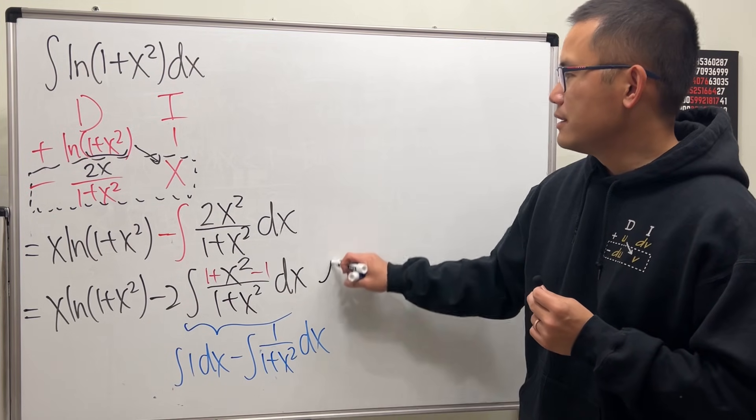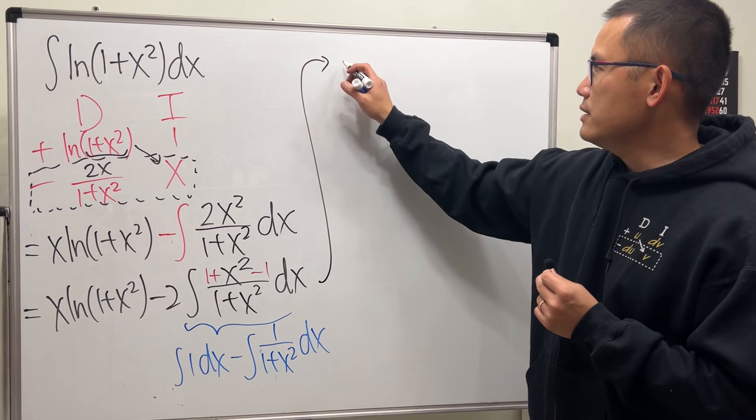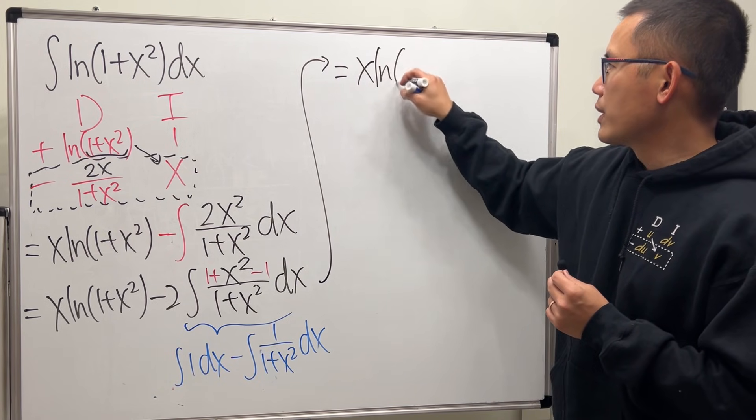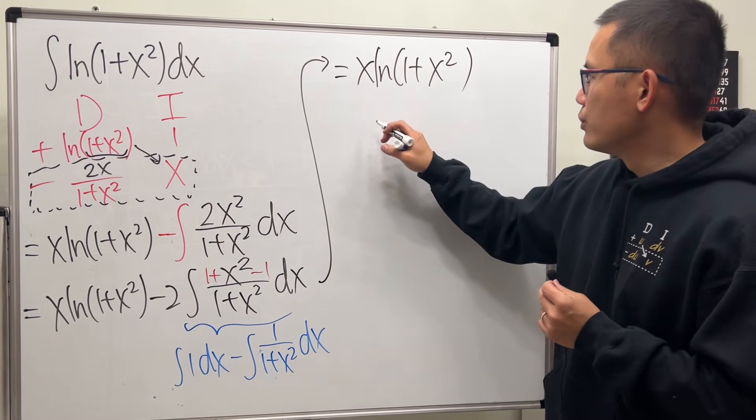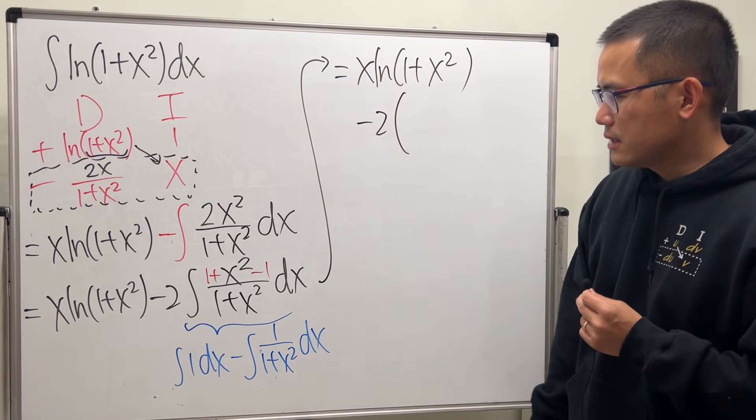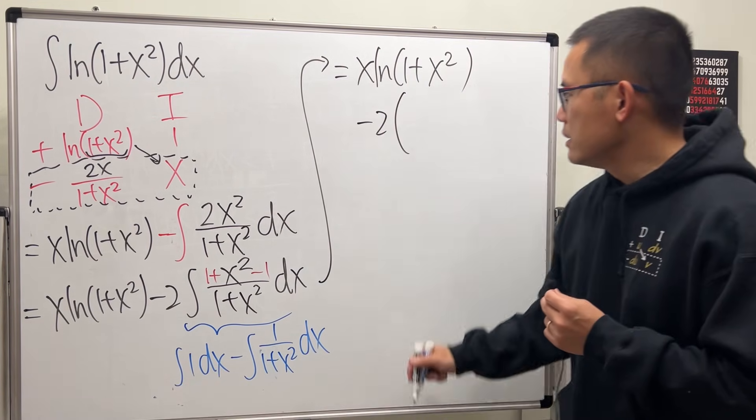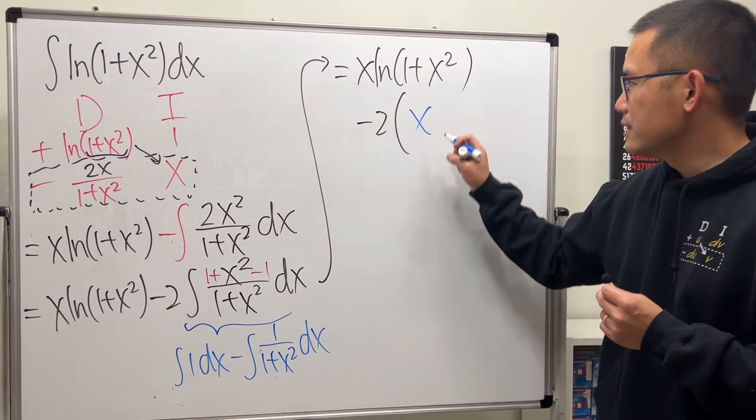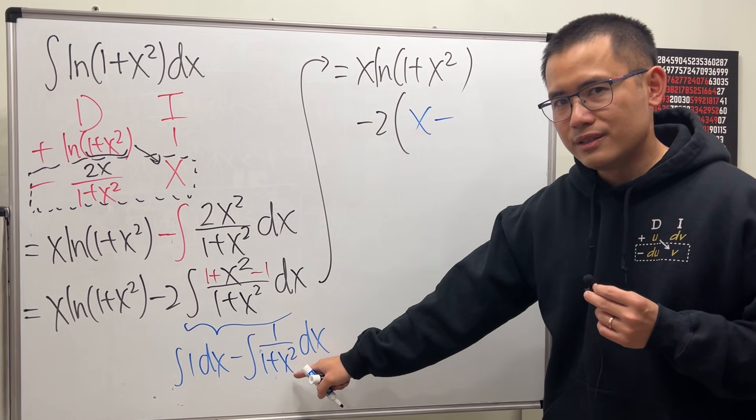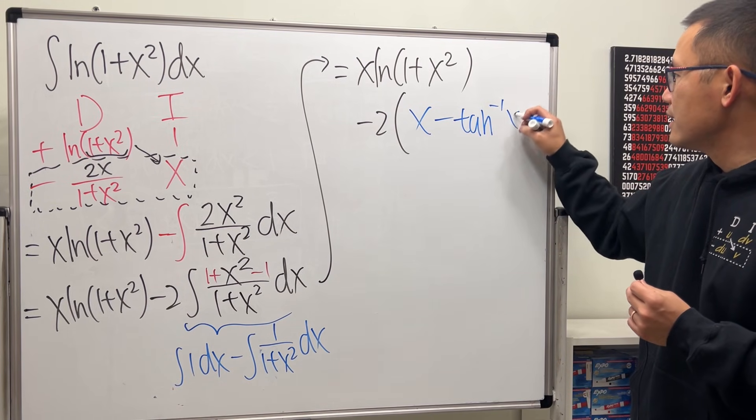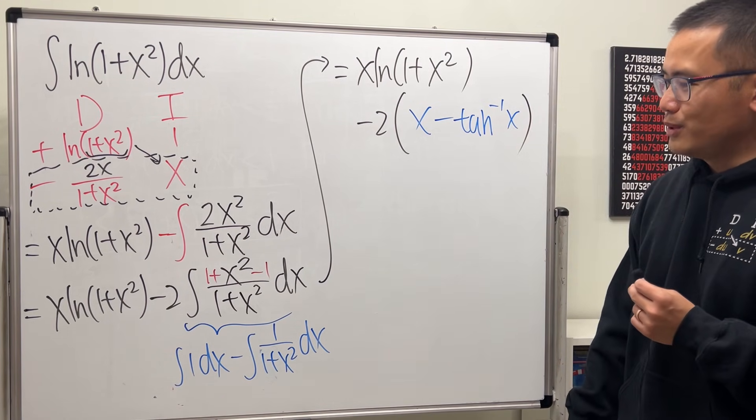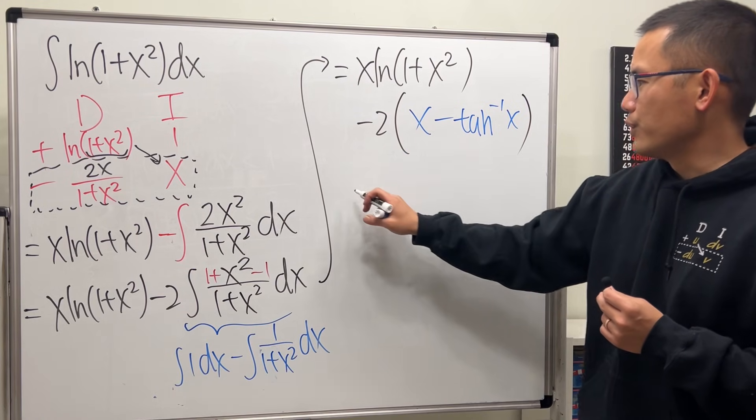So, ladies and gentlemen, we can figure out the answer already, because this right here stays, and then right here, we just have to do minus 2 times. This integral is just x, and then we have to minus. This integral is inverse tangent of x. Yeah, that's pretty much it, but at the end, I will distribute the 2 for you guys.